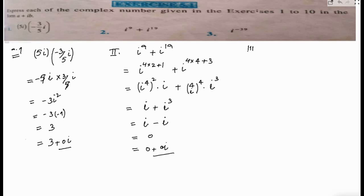Now let's come to the third part. Iota to the power negative 39. Whenever we're solving powers, take a multiple of four. So it's 4 times negative 10, that's 40, plus I will add 1.